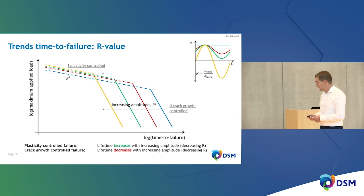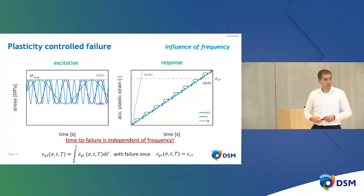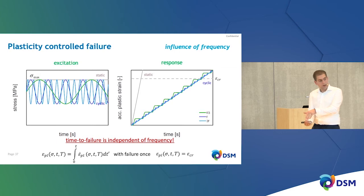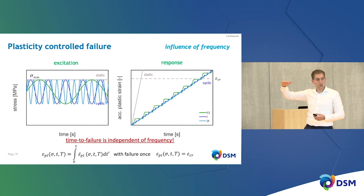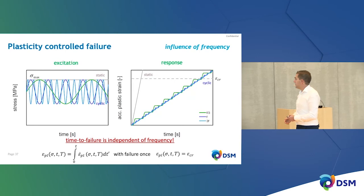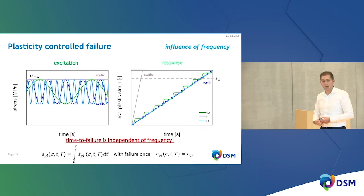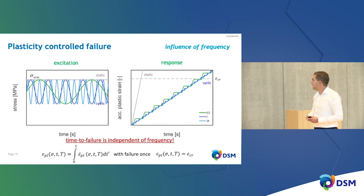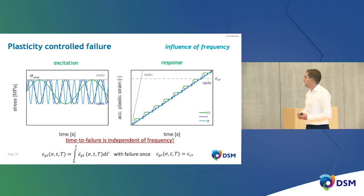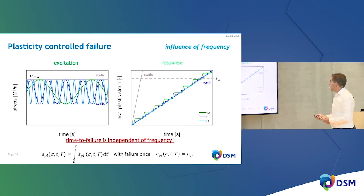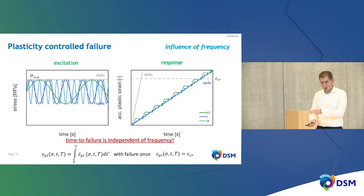What does frequency do? For crack-growth control it's trivial — it's simply the rate of opening and closing, how fast the fibrils at the craze tip deteriorate. For plasticity-controlled failure it's different — it's driven only by the mean stress accumulation rate. Changing frequency only changes the step size per cycle, but since you also have fewer cycles at lower frequency, the overall average accumulation rate doesn't change. This means the time to failure is independent of frequency for plasticity-controlled failure.